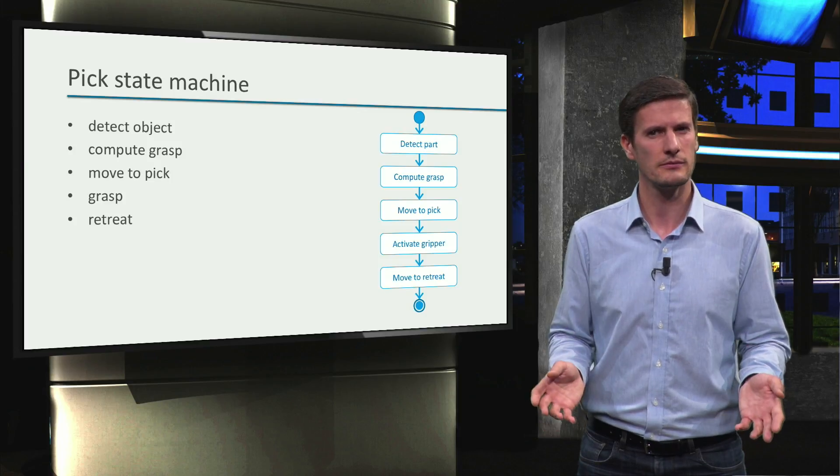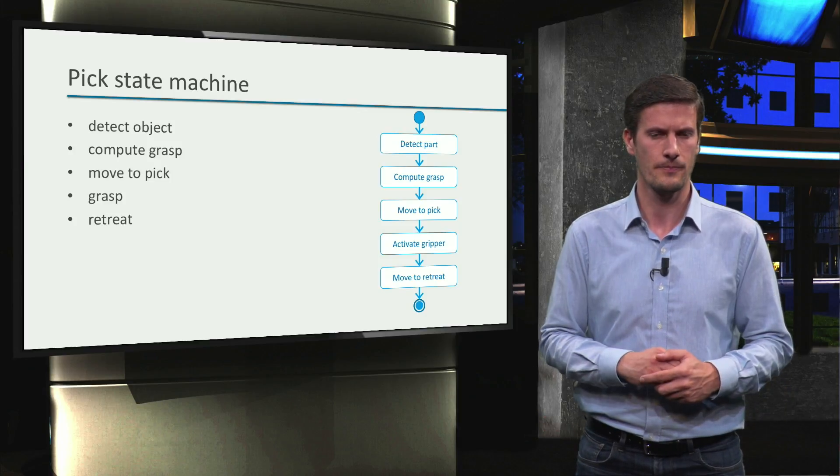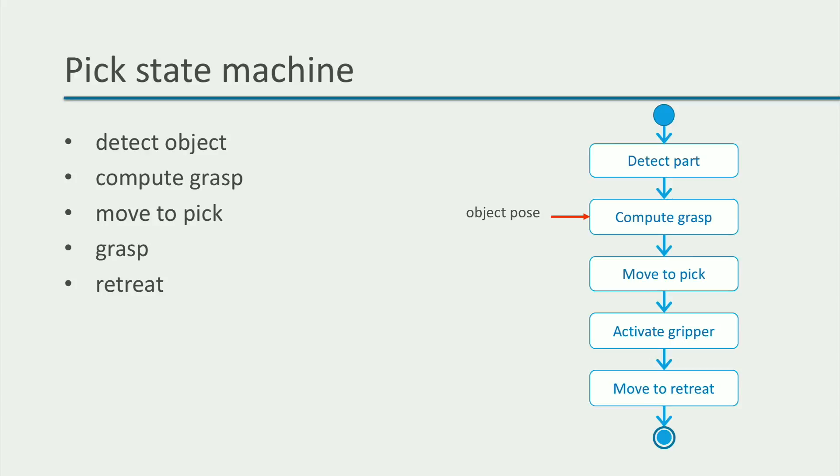Okay, are we done? Let's take a closer look. What do you think? Do you feel that this state machine solves the picking application? Maybe you feel that there are some things missing.